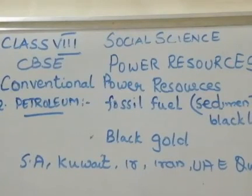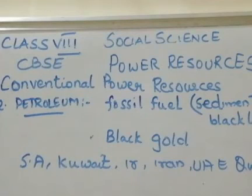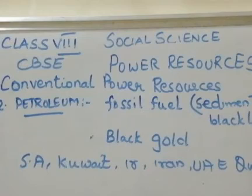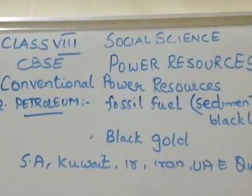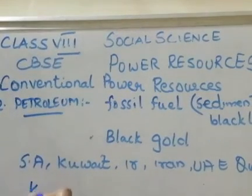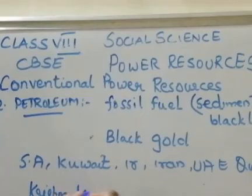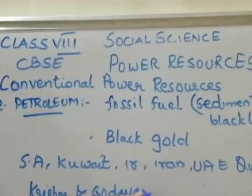In India, petroleum is produced at Bombay High in Mumbai, Digboi in Assam, and in the deltas of the Krishna and Godavari Rivers.